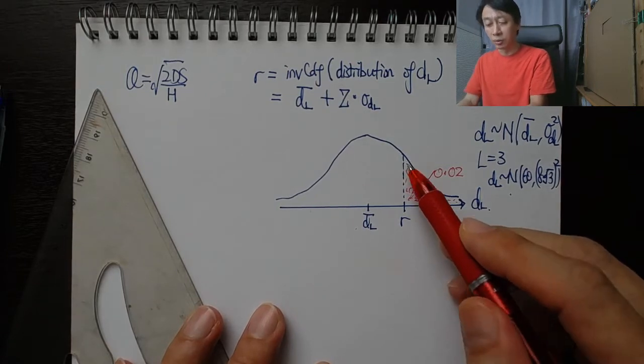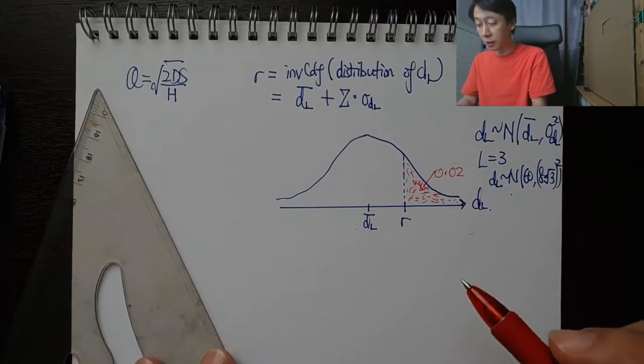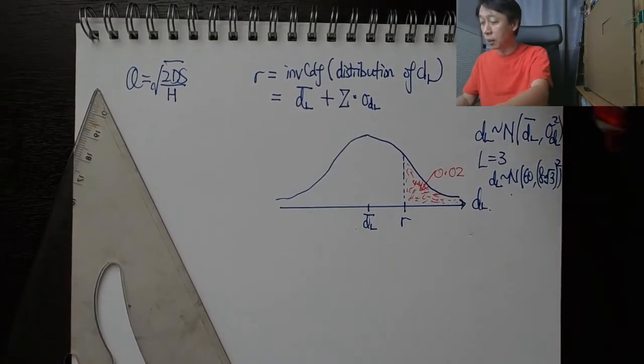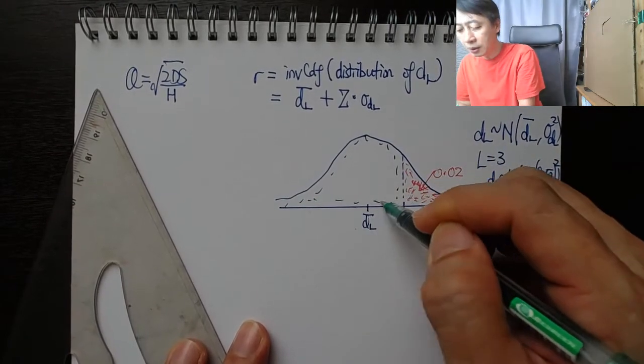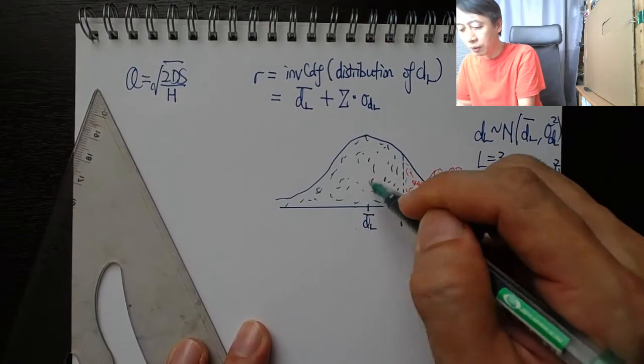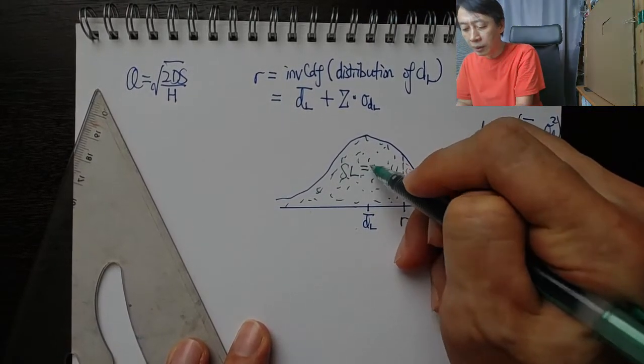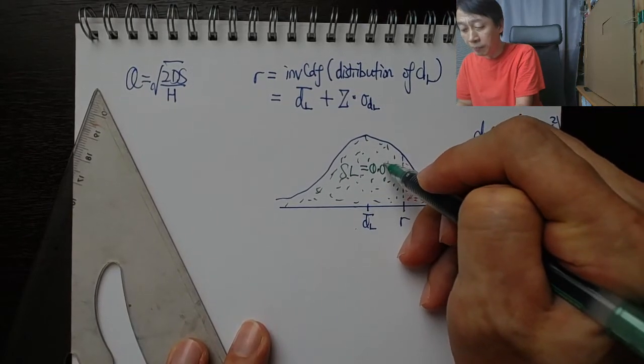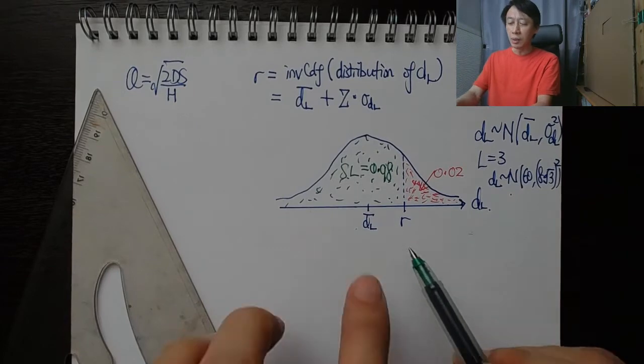That is going to be the area on top which will add up to no more than two percent. Therefore it also means that our service level is 98 percent, all this area here. That's our service level. So service level represents the probability of having stock to sell.